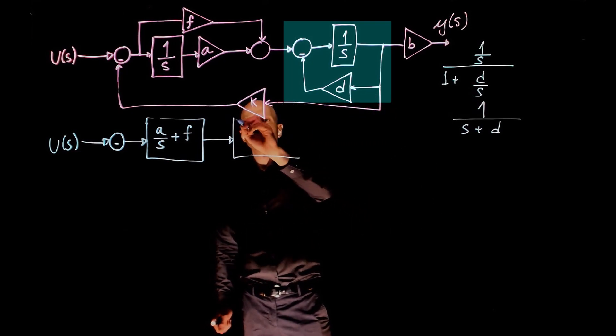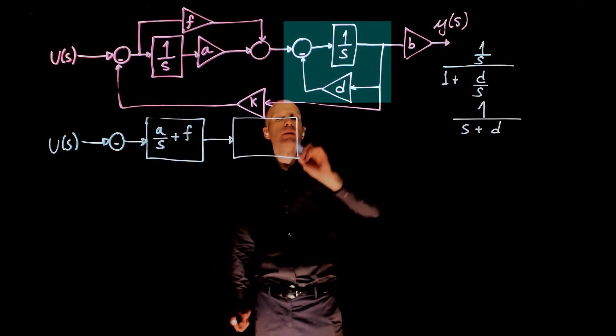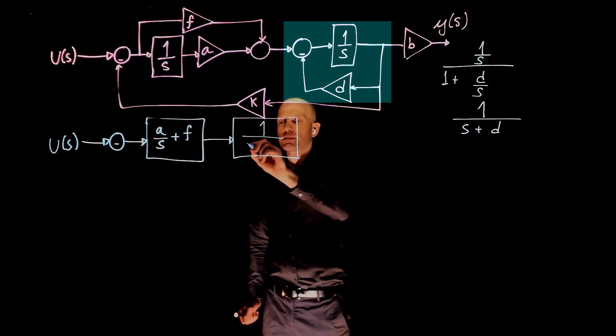So that block, this feedback here, becomes 1 over s plus d.